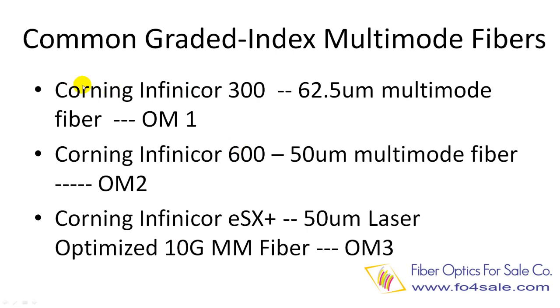The 62.5-micron core fiber used to be the most common multi-mode fiber. It is called OM1 fiber and has the lowest bandwidth among all three. It can carry gigabit ethernet up to 300 meters with 850-nanometer VCSEL laser.